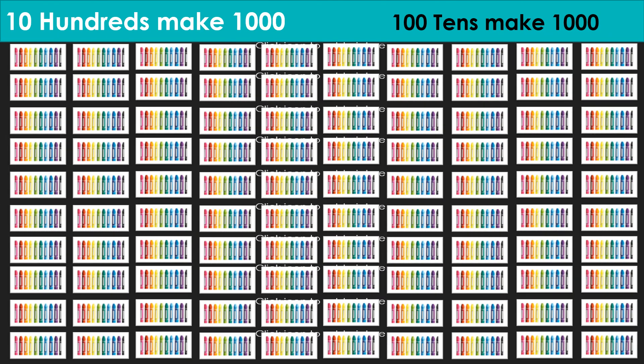10 crayons in one box, and 100 such boxes will form 1000 crayons. 10 hundredths make 1000, and also 100 tens make 1000.